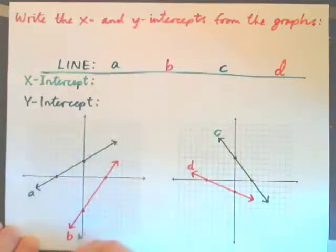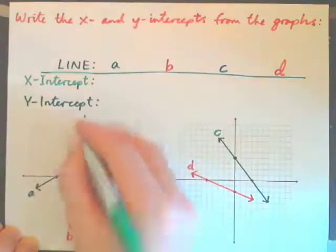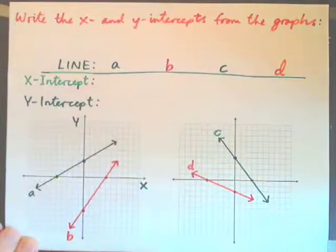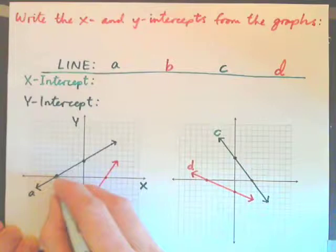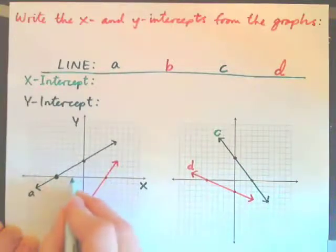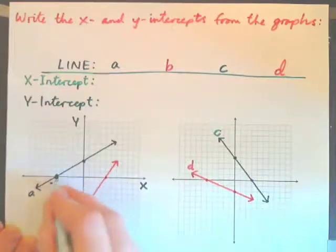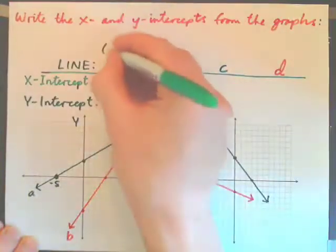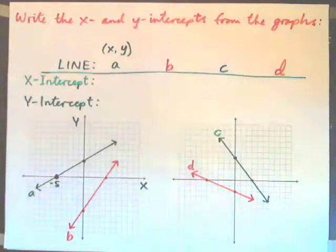The x-intercept is where the line crosses the x-axis. So we have to have our axes labeled, the x-axis and the y-axis. The x-intercept for this line is this point here. Now that hits the x-axis at 1, 2, 3, 4, negative 5. It crosses the x-axis at negative 5. But what you've got to write down is the ordered pair at which it crosses it.